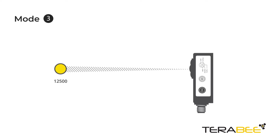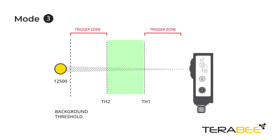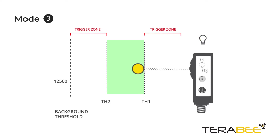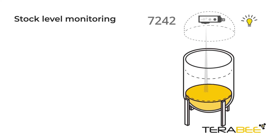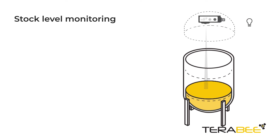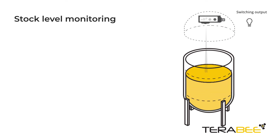In mode 3, in addition to the background distance threshold, a switching window is also taught in, creating 2 additional distance thresholds. This mode is often used for monitoring an approach position. Level monitoring is a great example — receive proximity notifications as soon as the level drops below or above a certain threshold, and benefit from regular distance data updates to monitor and control level changes over time.